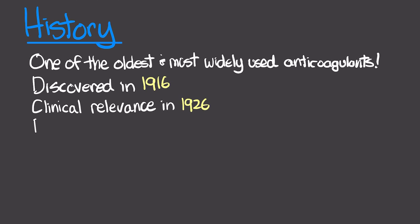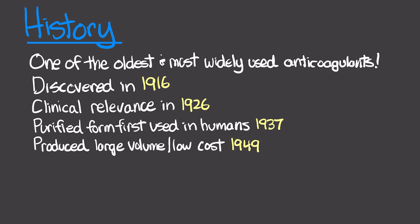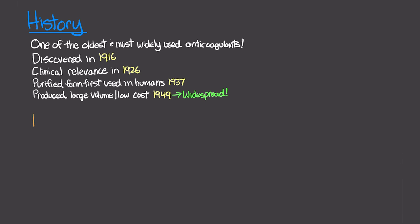The purified form of heparin was first used in humans in 1937, and then a method was patented to produce heparin in massive volumes at a really low cost in 1949, which really led to the widespread availability of the drug today. Heparin is a drug that interferes with the normal coagulation process by interfering with the clotting cascade and specifically thrombin formation.